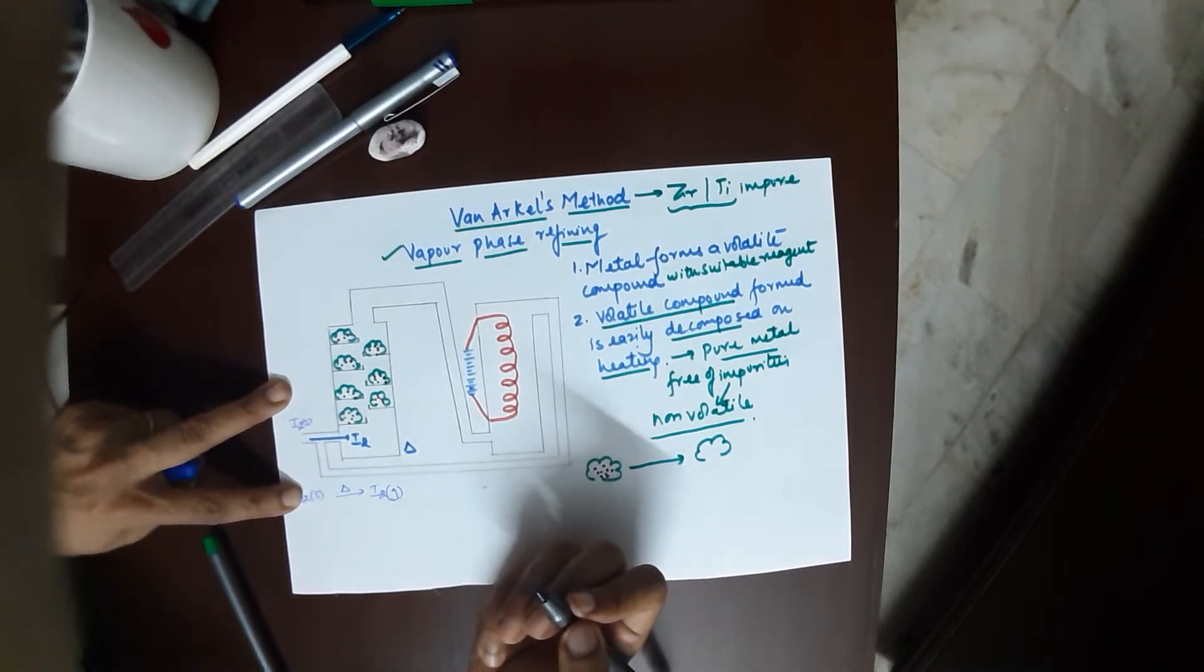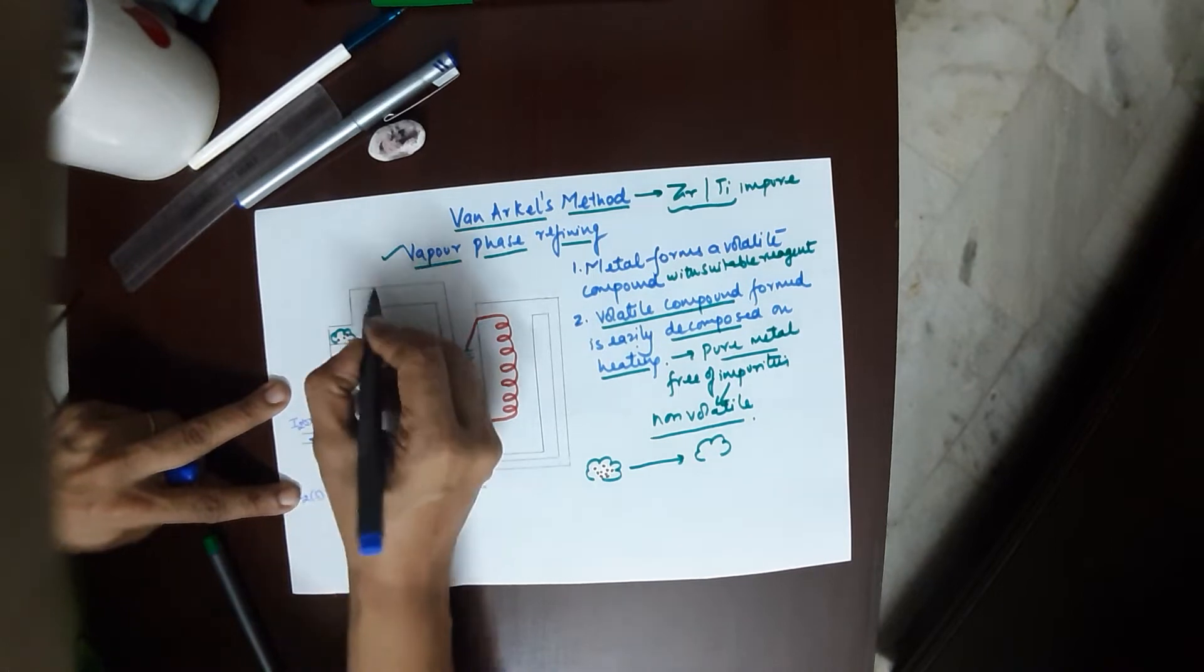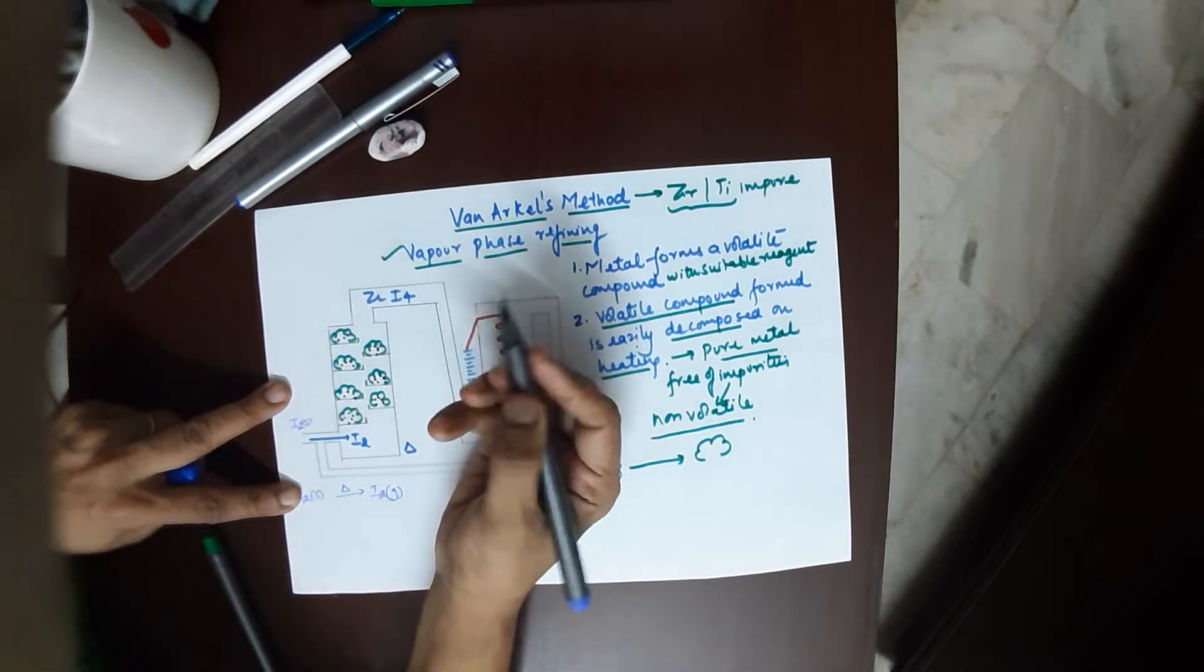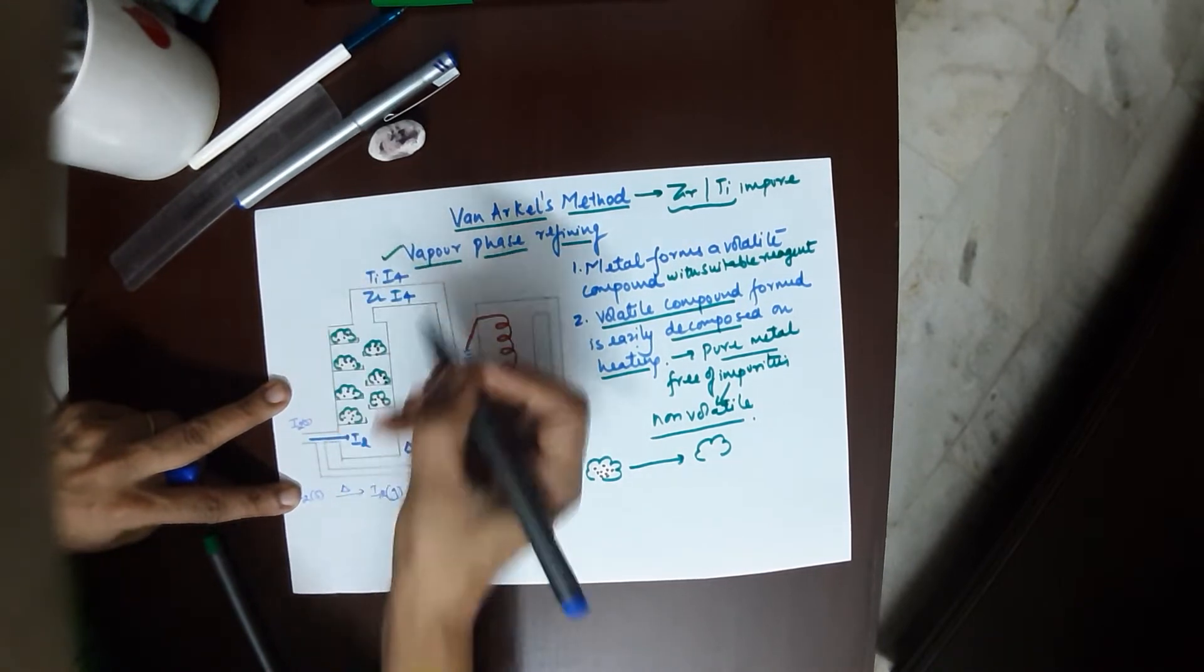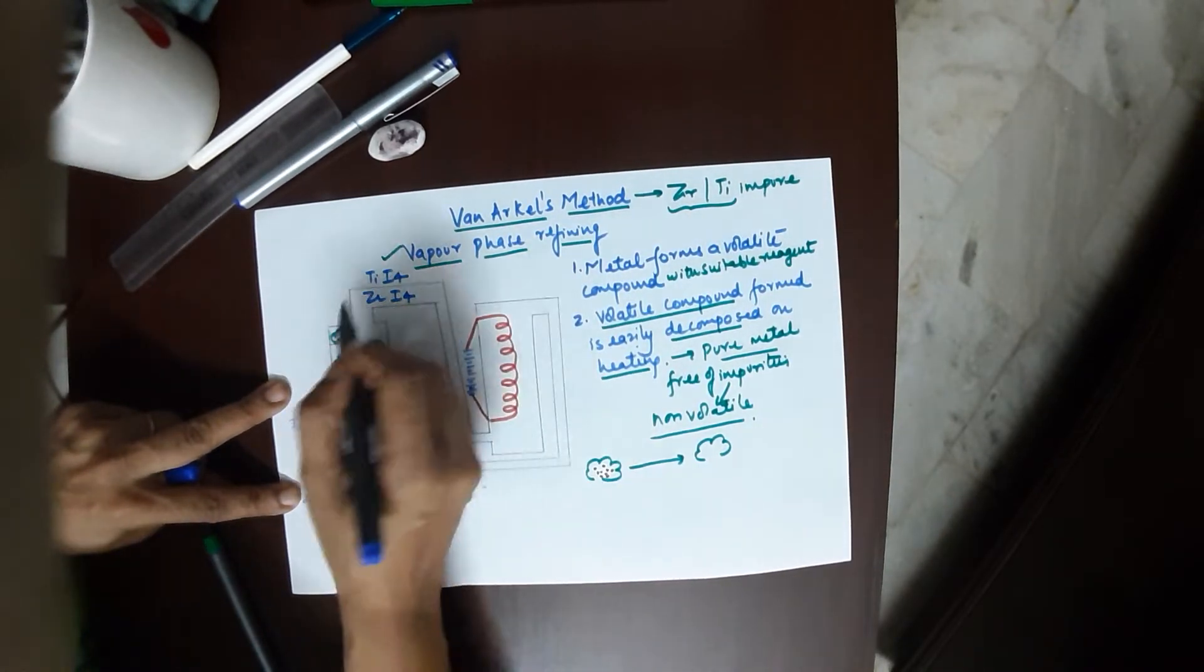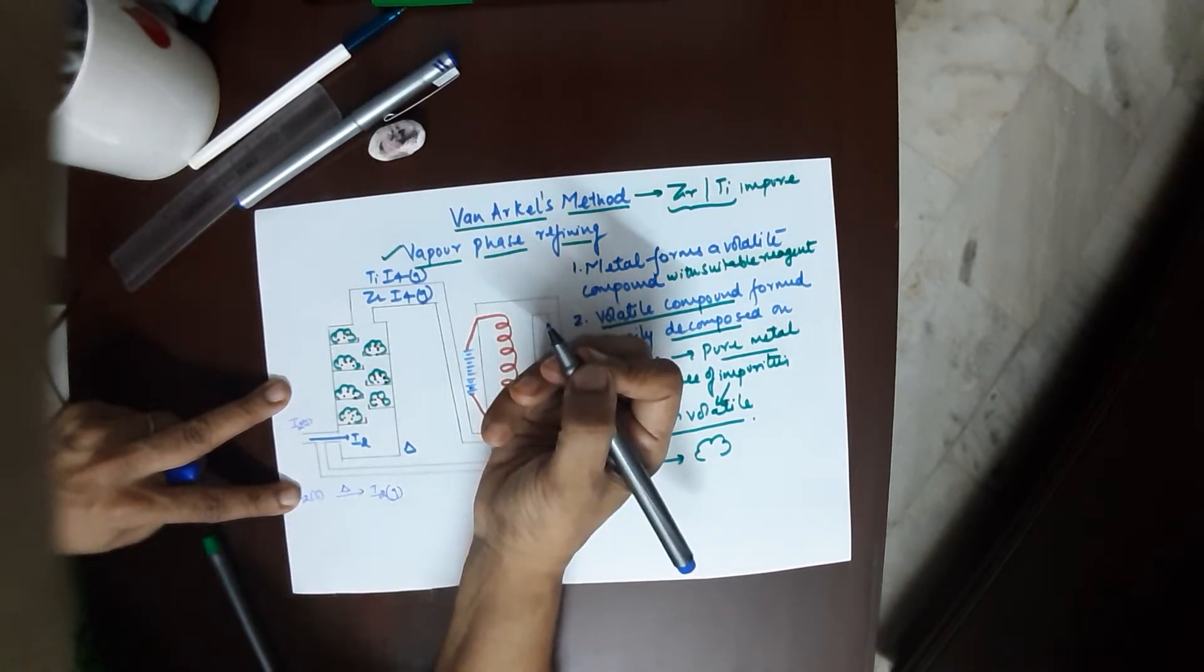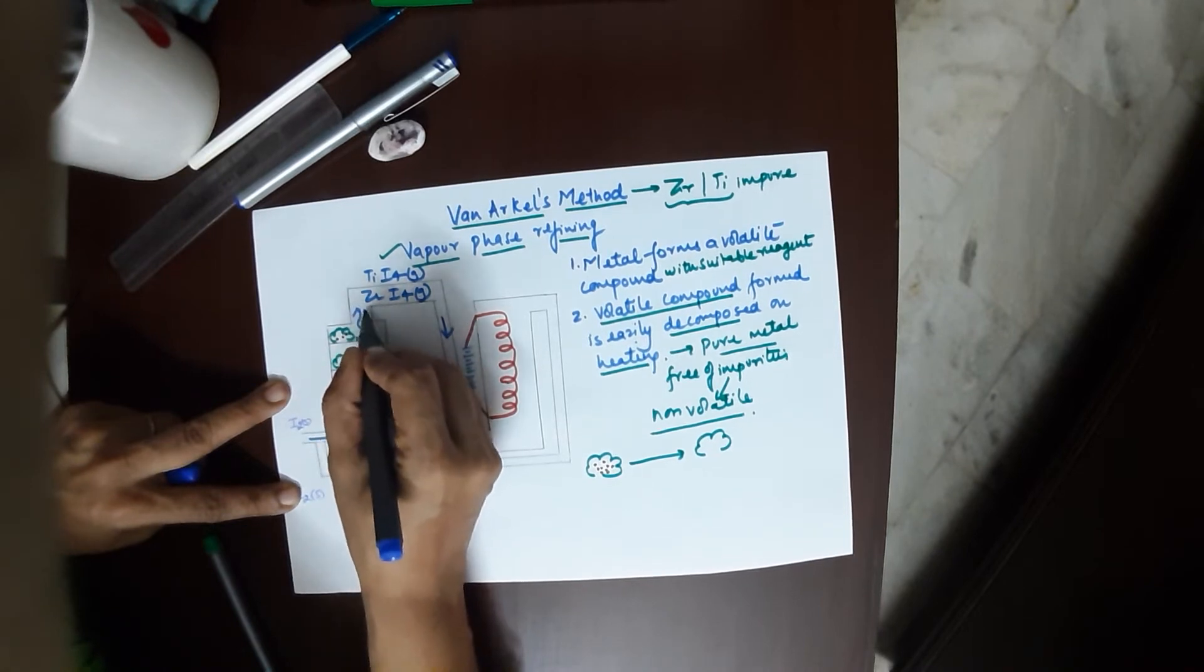It is this iodine gas which is purged into the first chamber. Your iodine gas moves here and you are heating it. You do not require to learn the temperatures. When iodine reacts with zirconium, it forms zirconium tetraiodide or titanium tetraiodide, depending on which particular metal you are trying to purify.